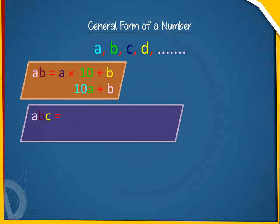ABC equals A into 100 plus B into 10 plus C, or 100A plus 10B plus C.